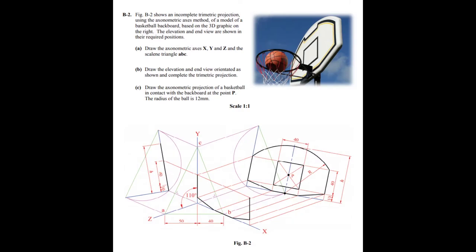This is the 2014 Higher Level Question B2 looking at Axonometric Projection. The figure shows an incomplete trimetric projection using the axonometric axis method of a model of a basketball backboard based on the 3D graphic on the right. The elevation and end view are shown in their required positions. Draw the axonometric axis X, Y and Z and the scalene triangle ABC. Part B: draw the elevation and end view orientated as shown and complete the trimetric projection. The final part is to draw the axonometric projection of a basketball in contact with the backboard at point P; the radius of the ball is 12mm.